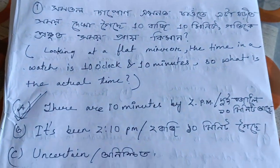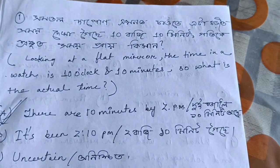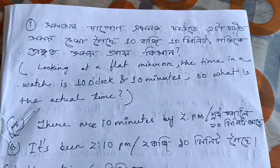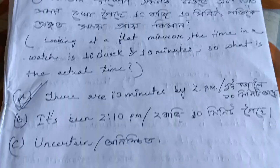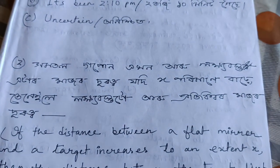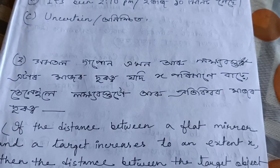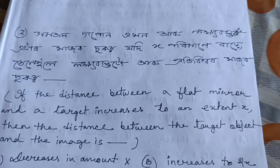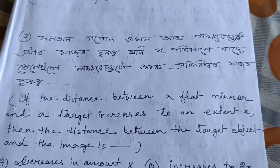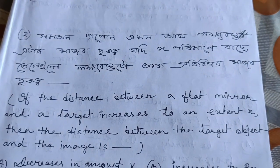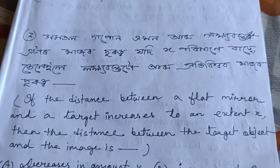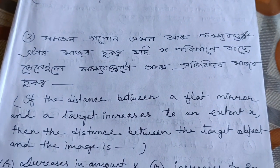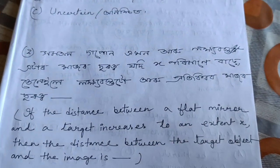Option number A: there are 10 minutes by 2 pm. It shows two days, one day.